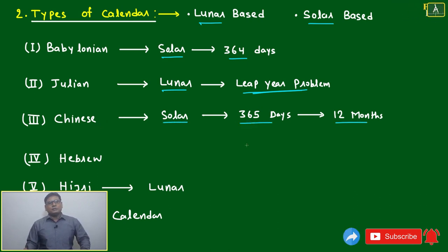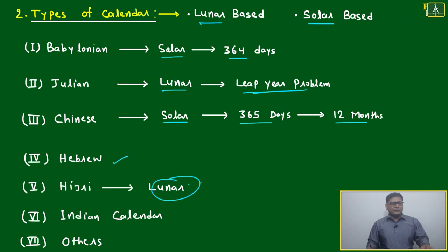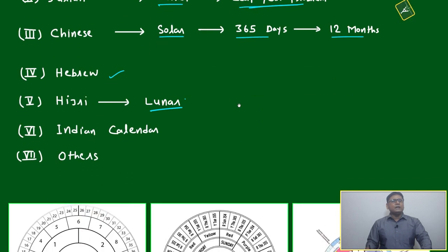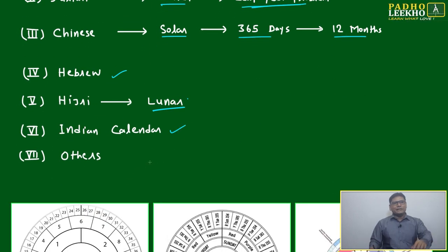The Hebrew calendar and the Hijri calendar — the Islamic calendar — follow the lunar only, based on the moon. As for the Indian calendar, I'm not going into it right now, otherwise this topic will take another half an hour, because I will go in depth.